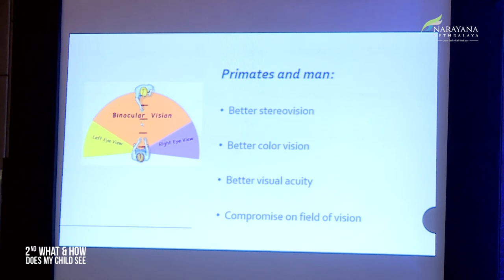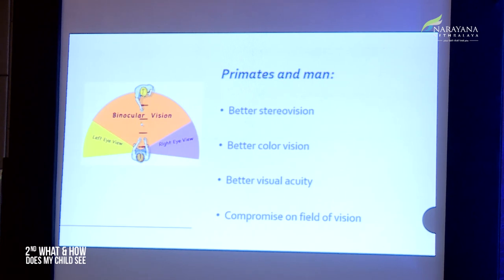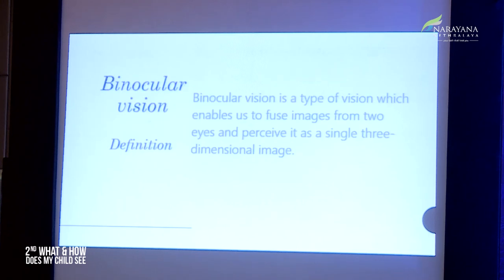Where does man stand in this cycle of evolution? Primates and man traded for better visual acuity, better colour vision, and better depth perception. But they had to give something away — they compromised on the field of vision. These are all the advantages gained because of the better frontally placed eyes. Binocular vision is a form of vision wherein the images from the two retinas are actually combined, giving rise to a single three-dimensional image.